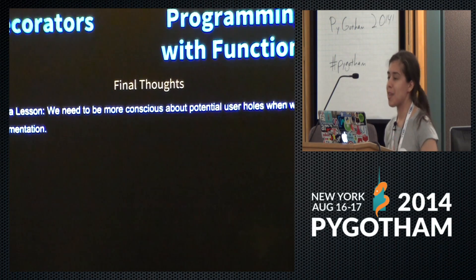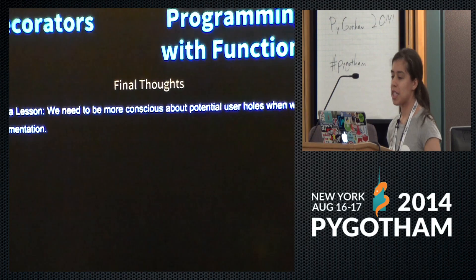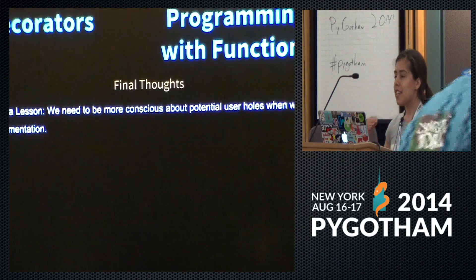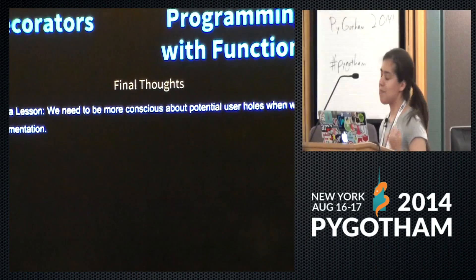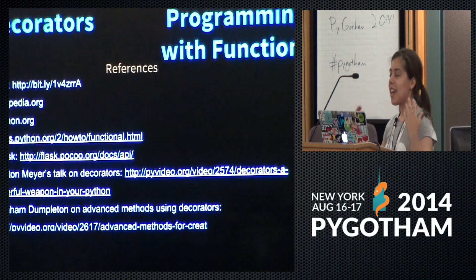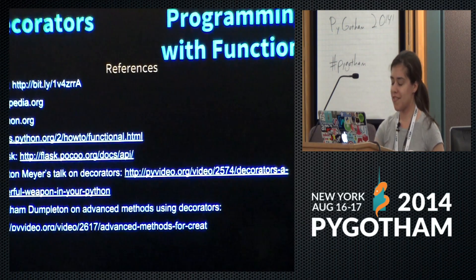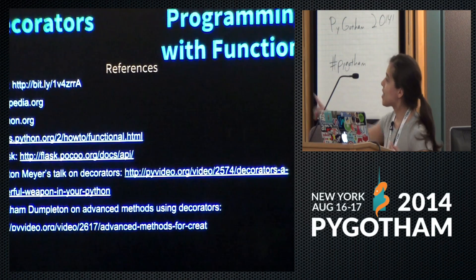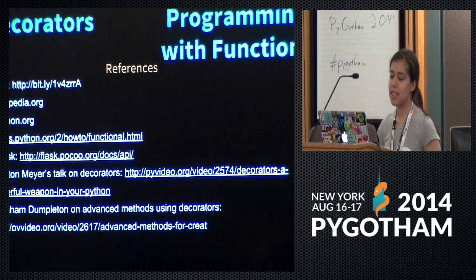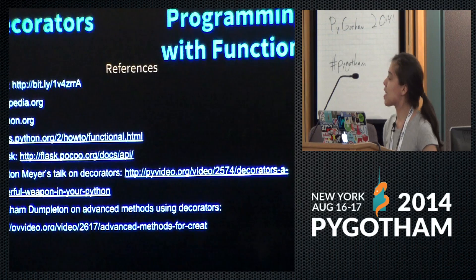So the meta lesson of this whole presentation: I started with the Python user hole and had the realization that we really need to be more conscious about potential user holes when we're writing documentation. At some point we can't assume zero knowledge, but if we're going to say 'hey, we're open source, we want everybody to join our community,' we need to go through that usability experience. If you're really interested in this topic, here are some cool links — including a link to this presentation, which is self-referencing — and also some other talks from PyCon this year that were more advanced on this topic.